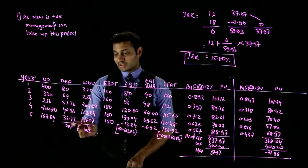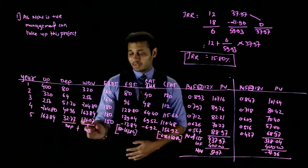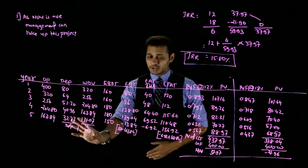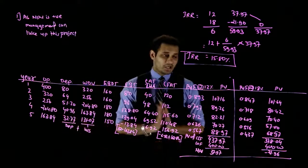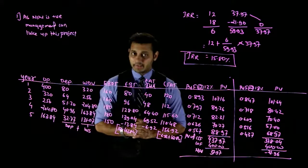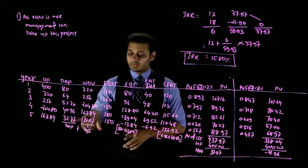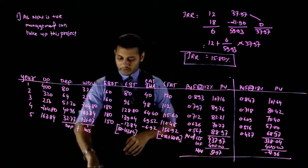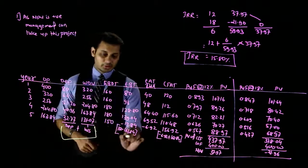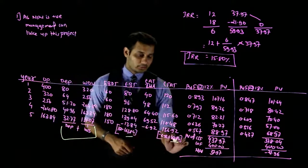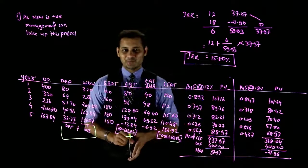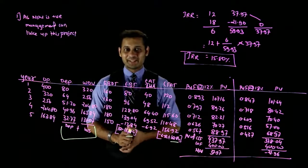One important thing to note down: the treatment of the short-term capital loss in the last year. Both the depreciation and the capital loss appear as non-cash charges, and tax saving must be recognized on both. This is where mistakes can happen. Make sure you note this treatment carefully. Note down the answers and then we'll move on to the next question.